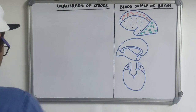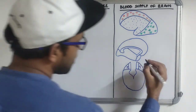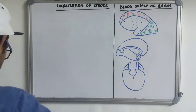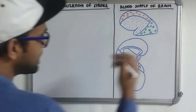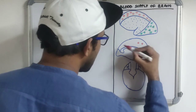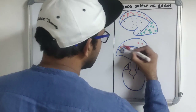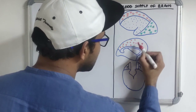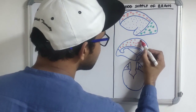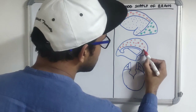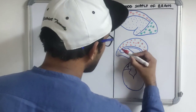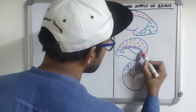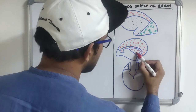On the medial surface of the cerebral hemisphere, only the temporal pole is supplied by the middle cerebral artery. The majority of the medial surface is supplied by the anterior cerebral artery, including the prefrontal cortex, the sensory leg area, the motor leg area, the supplementary motor area, the paracentral lobule, the cingulate gyrus, and the corpus callosum.